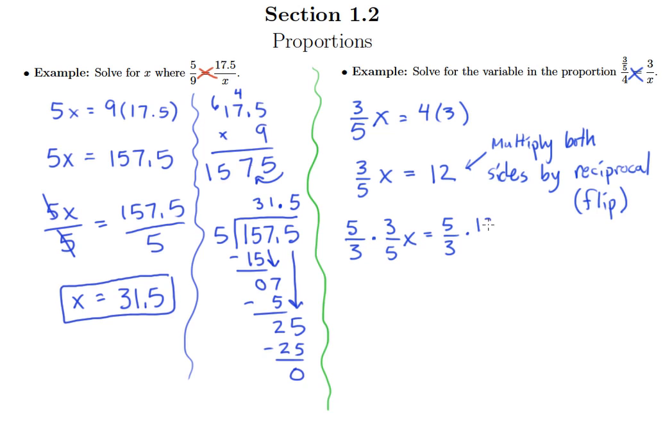Remember, you can always put a 1 underneath any whole number. So we can see 5's canceling, 3's canceling, leaving us with just x on the left side. And then remember, pre-reduce if possible. So we notice that 12 and 3 have a 3 in common.